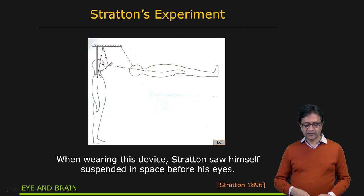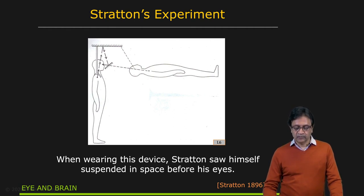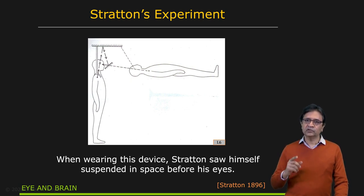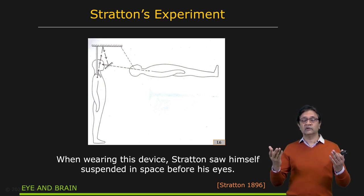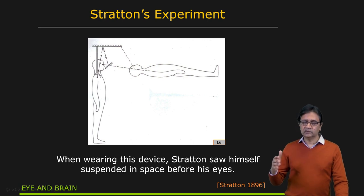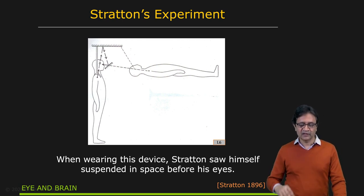A fascinating set of experiments was done by G.M. Stratton, back around 1896. His interest was in understanding what happens to our visual perception if the images in the eye are shifted or even inverted. In fact, he is the first human to have experienced upright images of the world — since images falling on our retina are actually inverted. He used mirrors and lenses to flip the image and experience what would be, for us, upside-down views of the world.